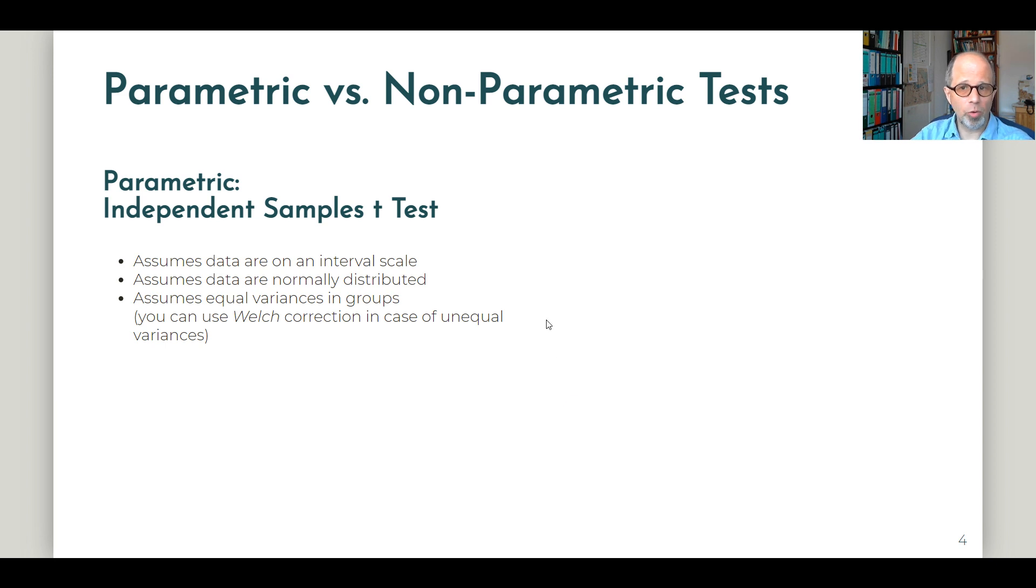If you have equal group sizes and larger samples, then violations of these assumptions are not so critical. With smaller group sizes or huge differences between group sizes, the violations can be a bit more critical. The last assumption about equal variances—if that is not met, there's a so-called Welch correction. So you can still deal with that situation.